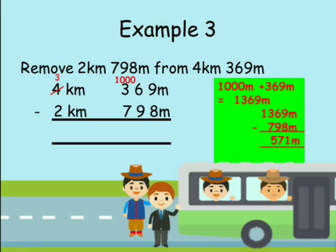You are left with 571 meters. In the kilometers place you are left with 3 kilometers minus 2 kilometers, which gives 1 kilometer. So the remaining distance to the second destination is 1 kilometer 571 meters.